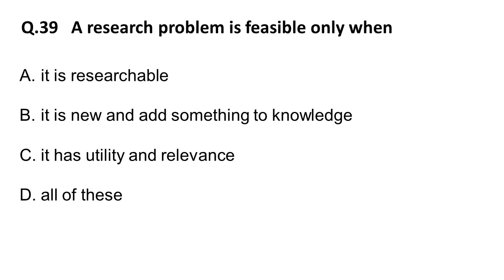Next question: a research problem is feasible only when — option A, it is researchable: true, if it is not researchable it is not feasible. Option B, it is new and adds something to knowledge: also required, no point doing research on something already fully discovered. Option C, it has utility and relevance: also correct. The correct answer is all of these.